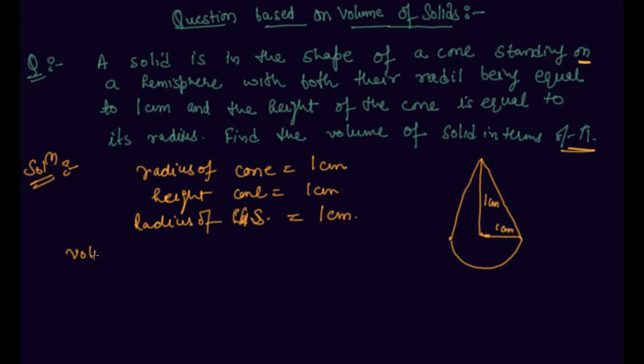So the volume of solid object will be volume of cone plus volume of hemisphere. And to write out the formula for volume of cone, this is 1/3 π r² h, and